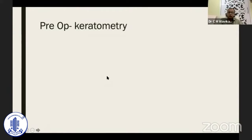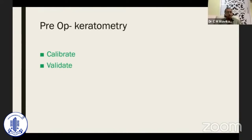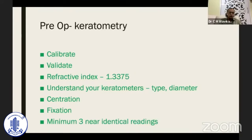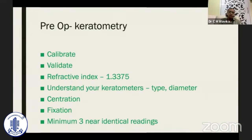That is not all — we need to know more about keratometry. First, calibrate and validate: you must calibrate every day and whenever there is a change of user, otherwise the readings have no meaning. You should know what kind of keratometer you are using — the refractive index and the diameter on which it gives the K reading. Centration and fixation are very important for getting correct readings, and you must try for three nearly identical readings so that they are predictable and reproducible.